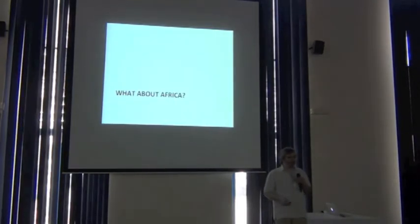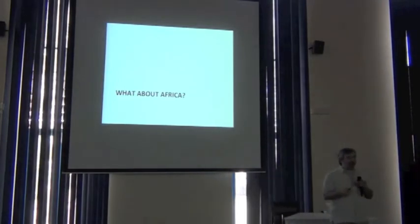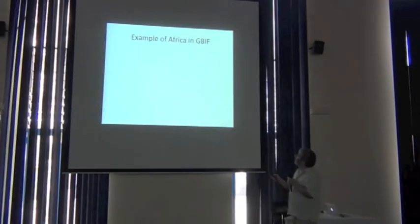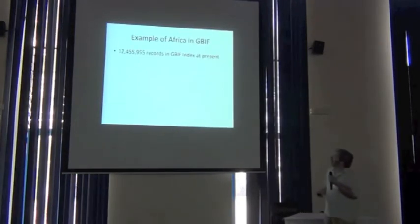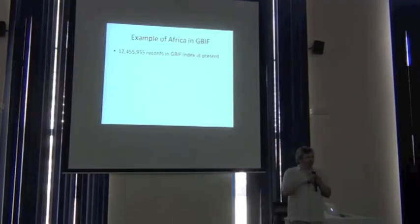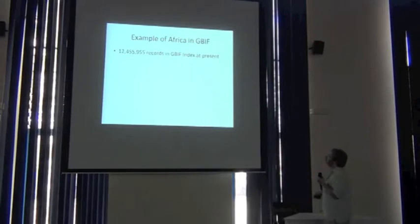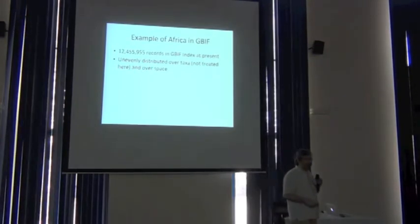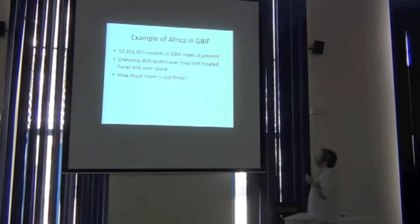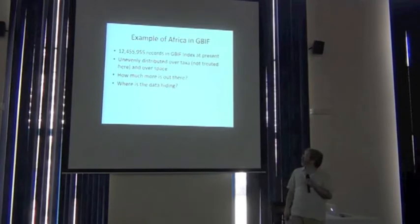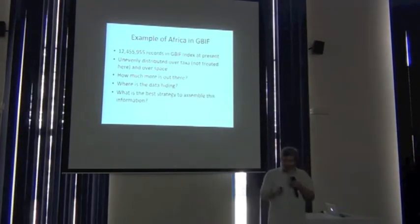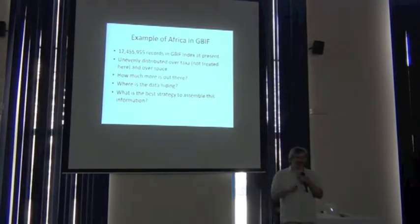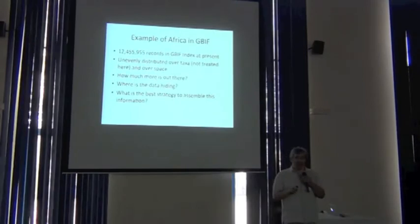So you guys work in Africa. I'm not going to presume to tell you much about Africa, but I will give you some reflections. Here is information on African data in GBIF. By my calculations, there are 12 and a half million records that pertain to African biodiversity in GBIF. Obviously, those records are not distributed evenly across taxa and across space. How much more is out there? Where are those data? And what's the best way to accumulate those data? I can tell you right now that two-thirds of the digital accessible knowledge of the biodiversity of Africa come from one country.